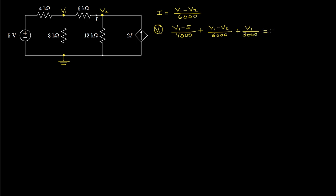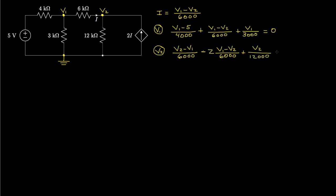By Kirchhoff's current law, that sum has to be equal to 0. Then we'll move to the node associated with voltage V2. The current flowing in that direction would be V2 minus V1 over 6,000. Then the current in this direction — we've got 2I flowing inward, so that'll be negative 2 times I. We've noted that I is defined by Ohm's law as V1 minus V2 over 6,000. This is one of the key points in solving circuits with dependent sources. We'll add the current flowing in this direction, which is V2 over 12,000, and set all of that equal to 0.